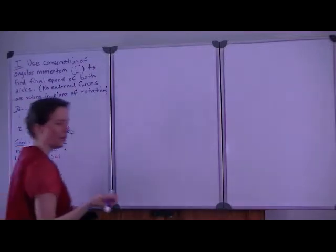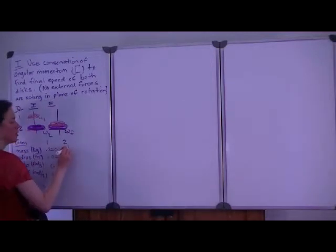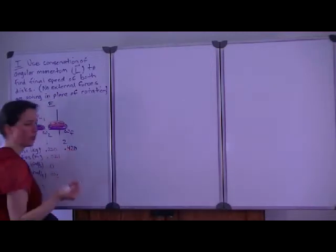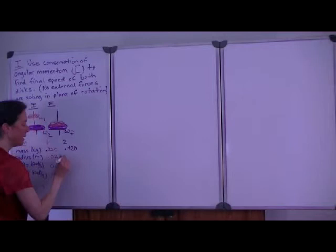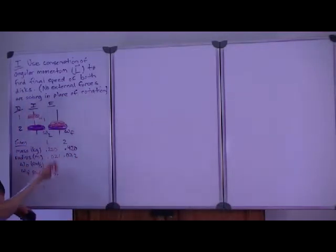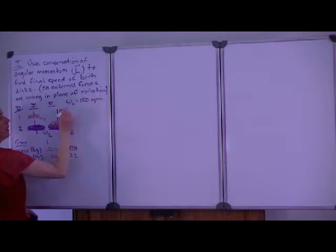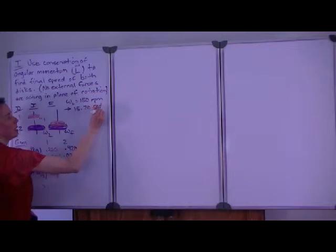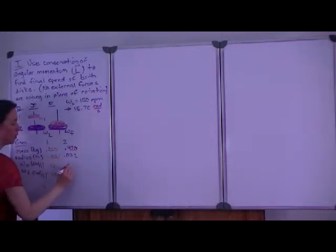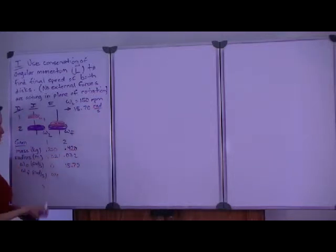For mass 2, we have a mass of 420 grams, or 0.420 kilograms. The radius is 0.032 meters. Its initial speed is not 0. So omega 2, we're told it's rotating at 150 revolutions per minute. We need to convert that. It becomes 15.70 radians per second. And at this point in the course, I will leave that computation to you. We do not know the final speed of disk 2 either, but we do know it's the same.